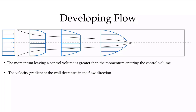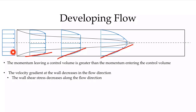Also, the velocity profile slope at the wall is decreasing along the flow direction. If the slope is decreasing, then the wall shear stress is decreasing along the flow direction. We'll have a maximum wall shear stress at the beginning of the pipe — when we go suddenly from the inlet velocity to zero — and that wall shear stress will decrease as we move down along the pipe. The wall shear stress is the viscosity times the velocity gradient in the radial direction evaluated at the wall.